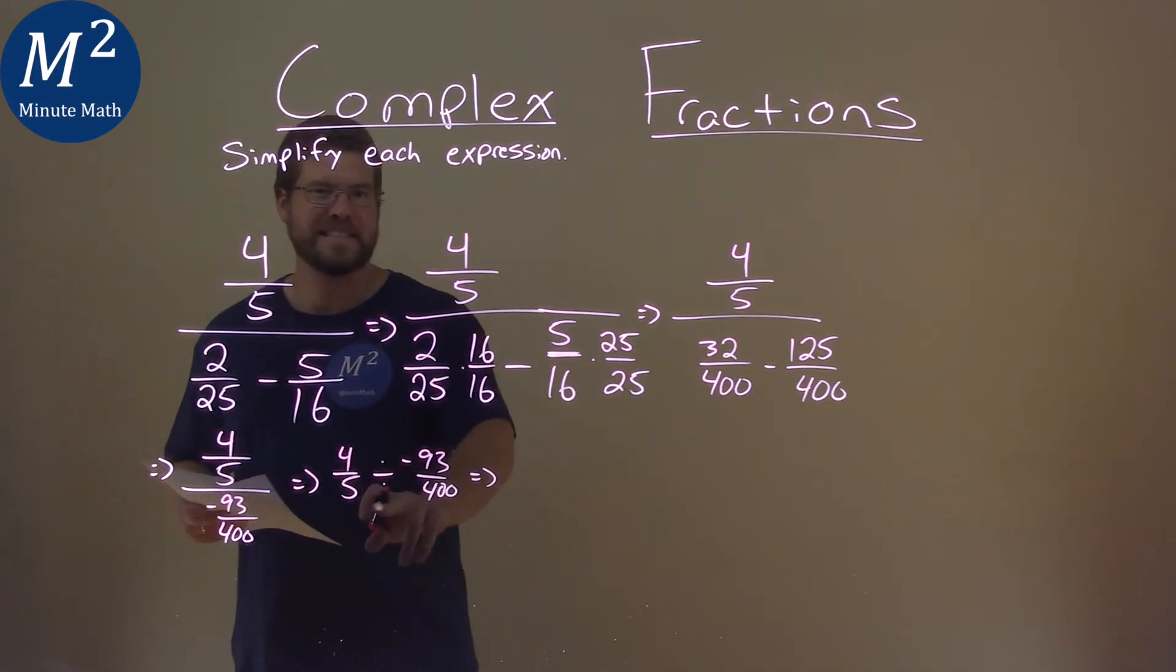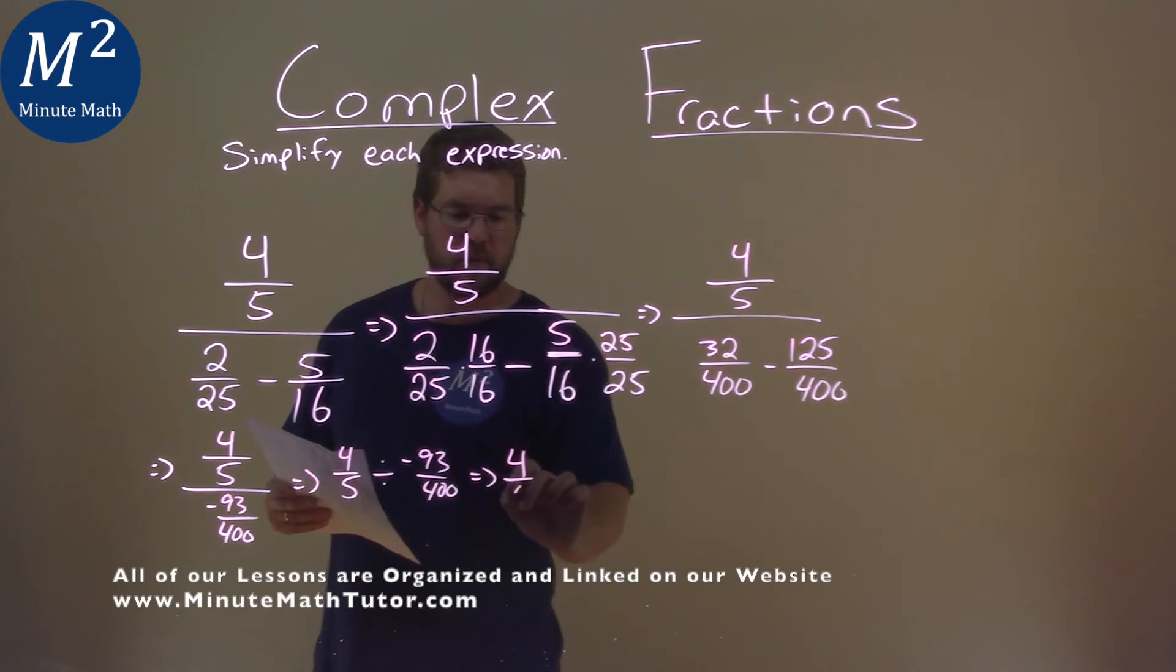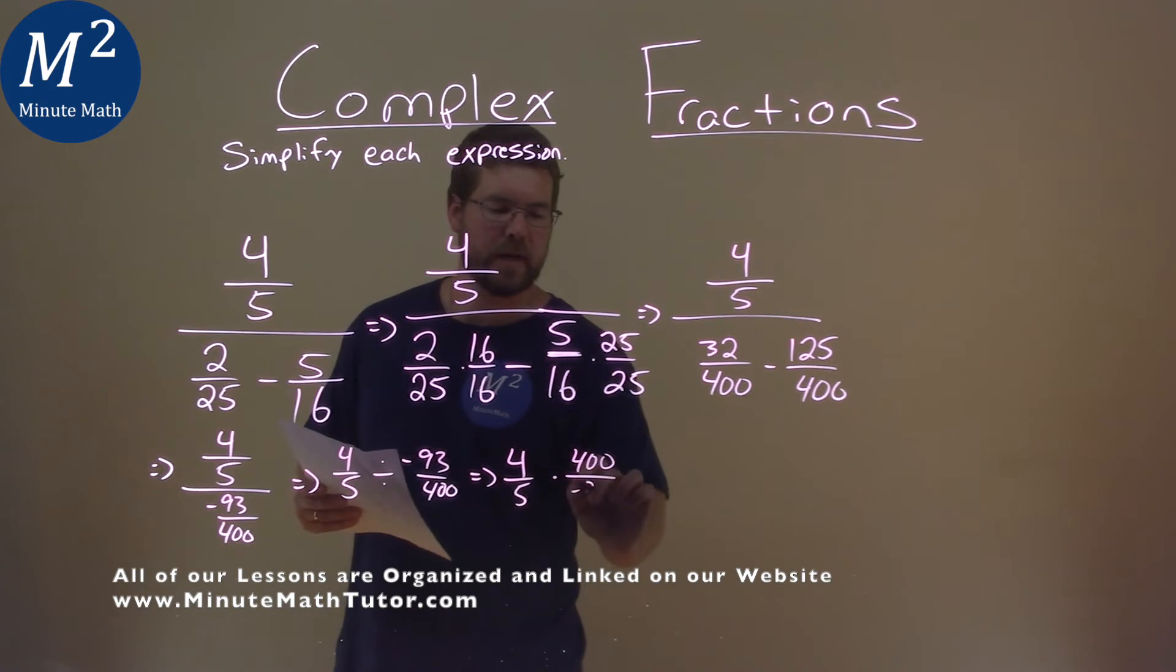Which hopefully you can see is a multiplication problem, 4 fifths times we flip this fraction, 400 over a negative 93.